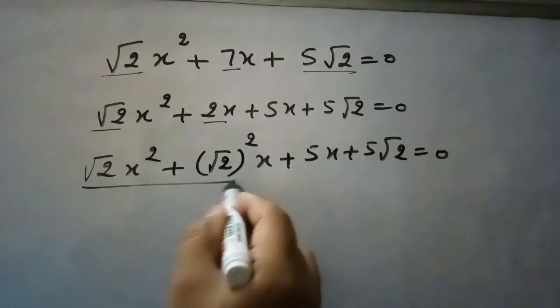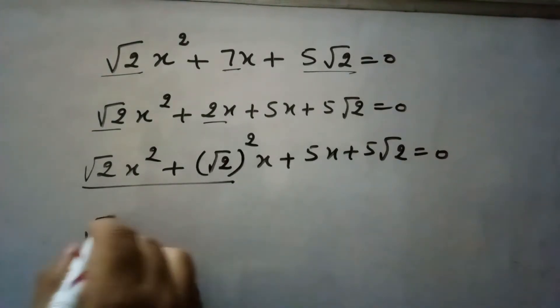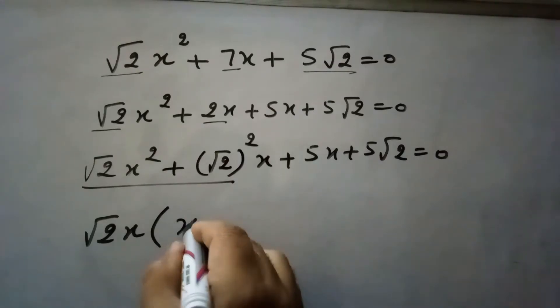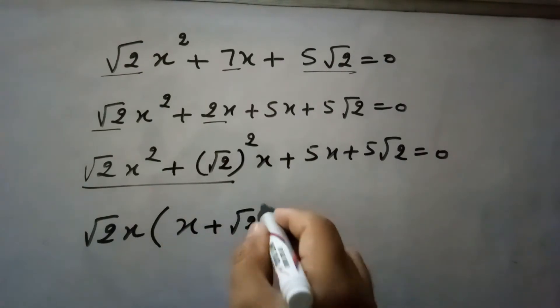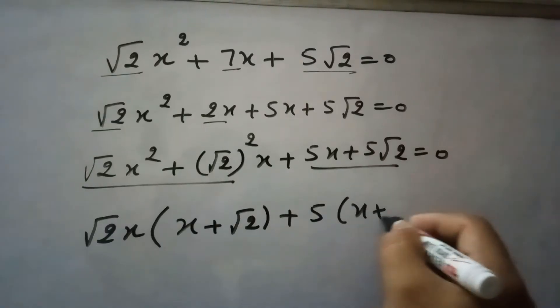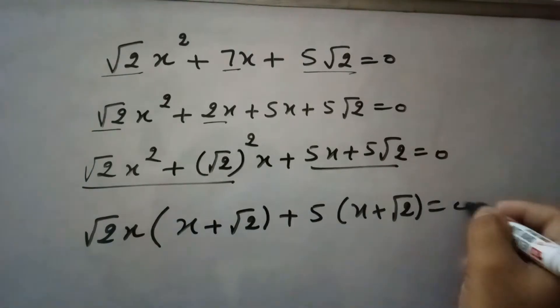Now if you see in these two terms, here root 2x is common. So we will write here x plus root 2, and in this pair, 5 is common. So inside the bracket, it is x plus root 2.